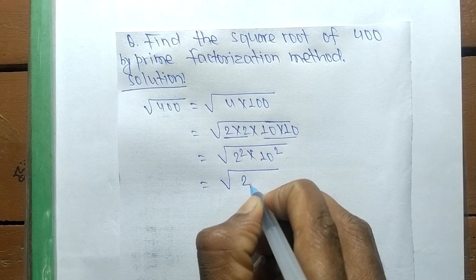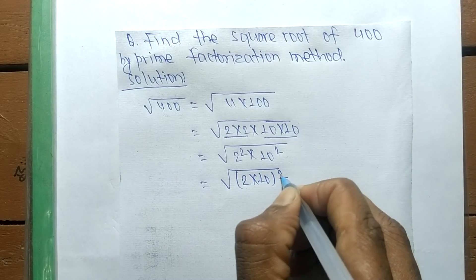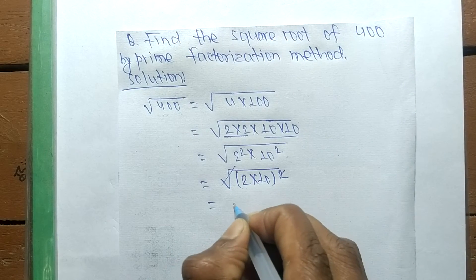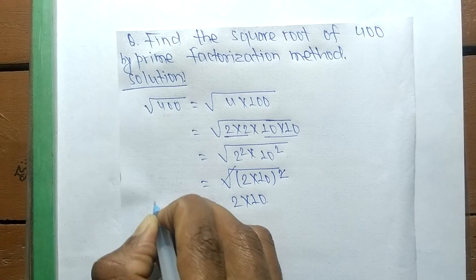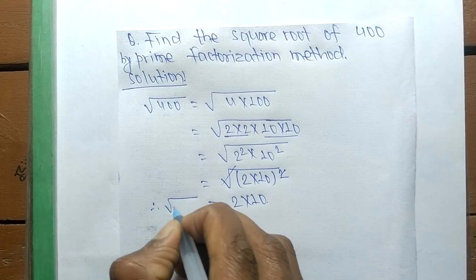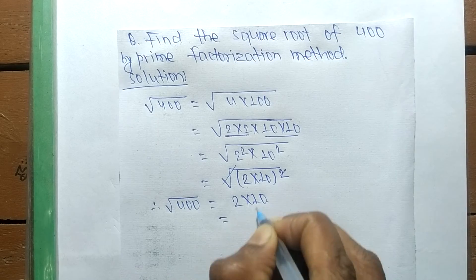And we write it as 2 into 10 whole squared. So square and square root cancel, and the number comes out as 2 into 10. Therefore, the square root of 400 is equal to 2 into 10, which means it is 20.